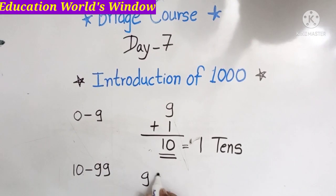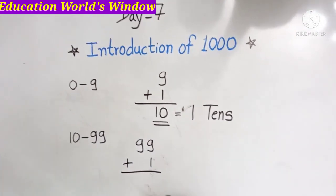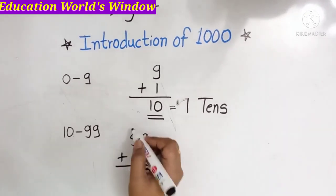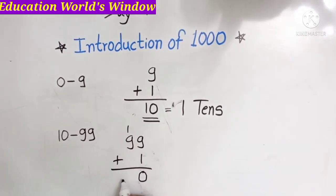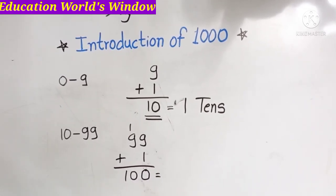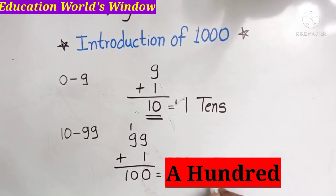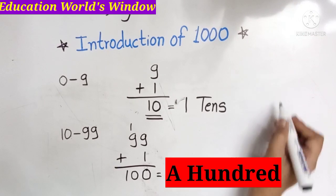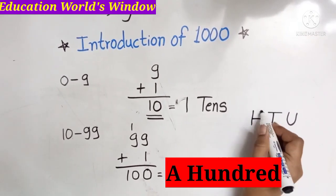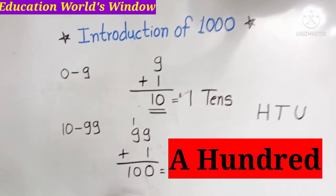When we add 1 to 99, what do we get? 9 plus 1 is 10, carry 1. So 9 plus 1 again is 10, carry 1. The result is 100. A hundred — it has 4 places. Here, 100 is the smallest three-digit number.